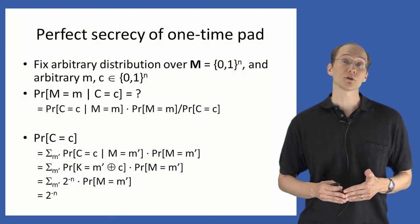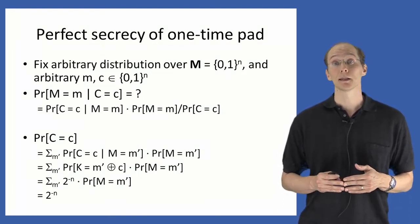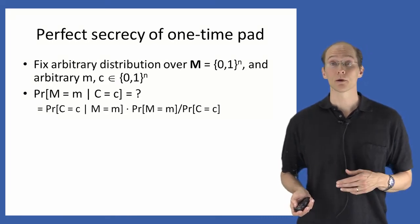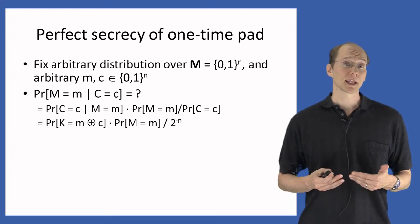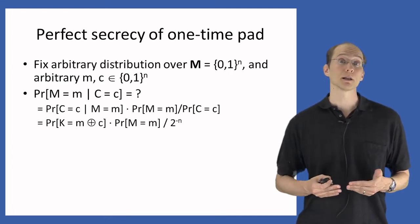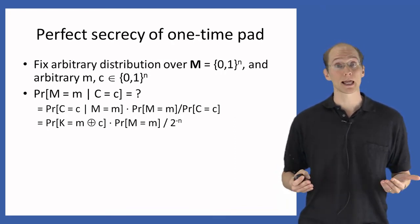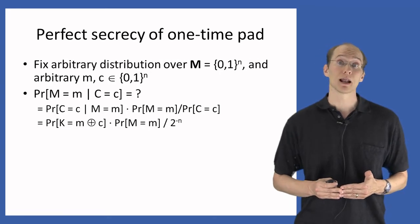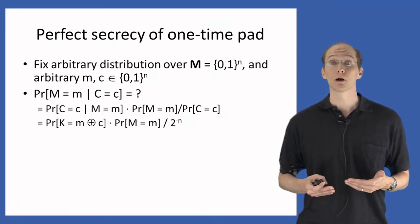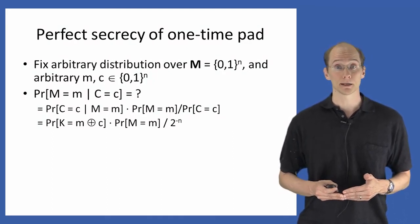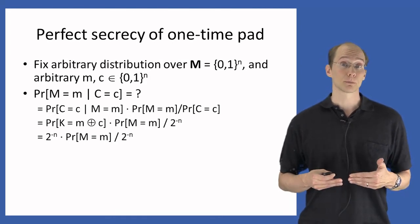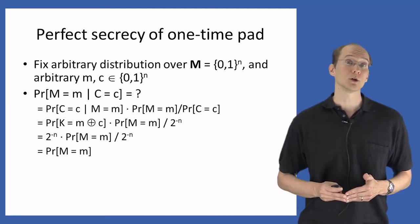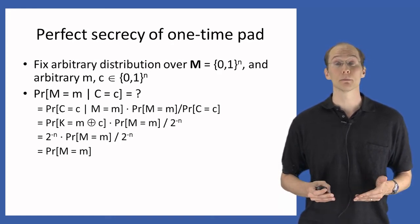Coming back to our main expression: the probability that the ciphertext equals c given that m equals m is, again, the probability that the key takes on the value m XOR c — exactly as before, just replacing m' with the particular message m. We carry the probability that m equals m, and from the previous calculation the probability that the ciphertext equals c is exactly 2^(-n). The probability that the key equals m XOR c is also exactly 2^(-n). The 2^(-n) in the numerator and denominator cancel, leaving simply the probability that m equals m.